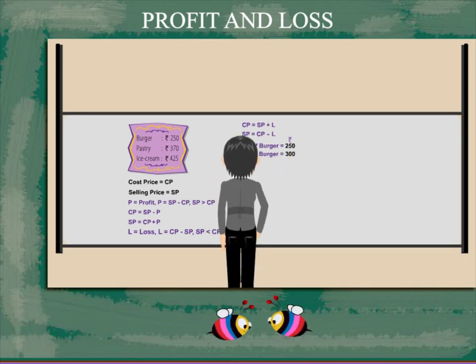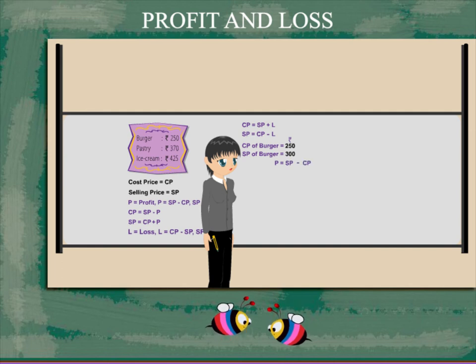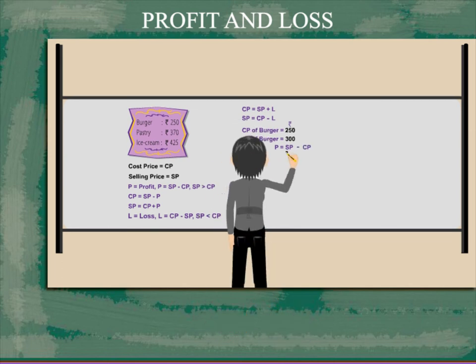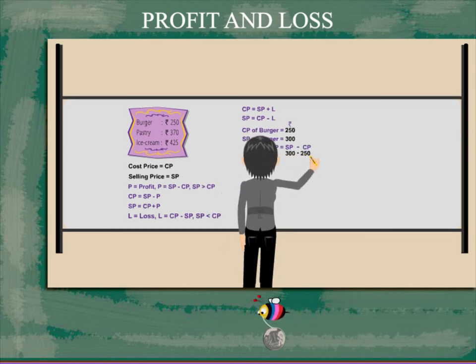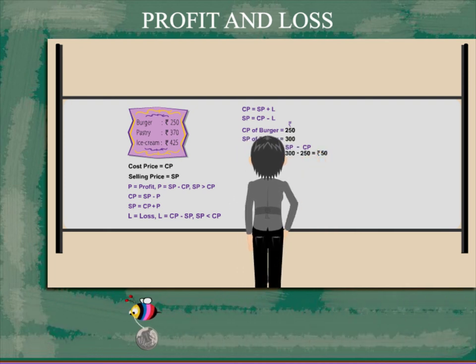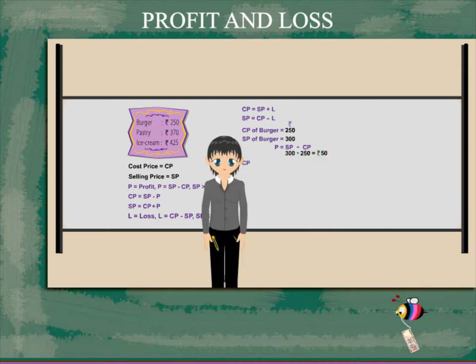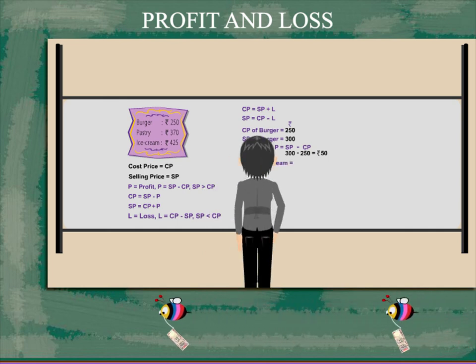SP is greater than CP, so the profit is 300 minus 250 equals rupees 50. CP of ice cream is rupees 425 and SP is rupees 375.